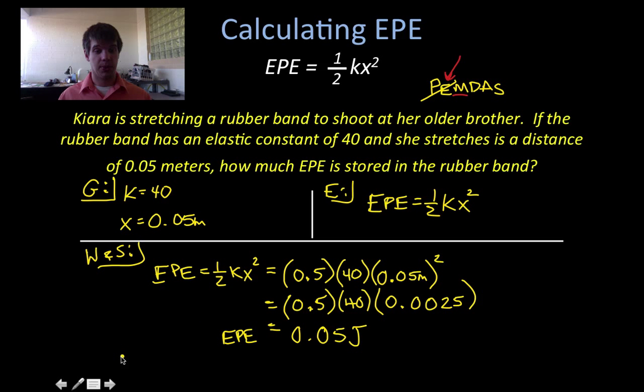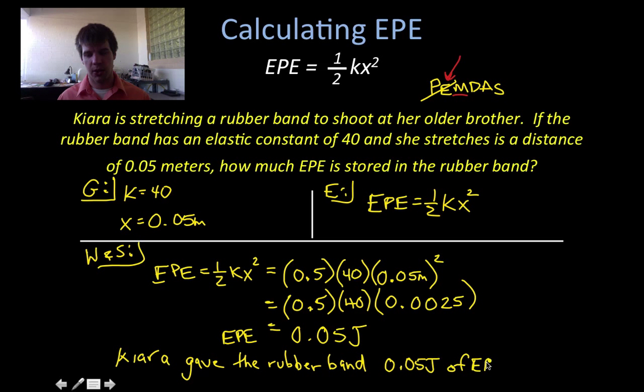So our answer would say, Kiera gave the rubber band 0.05 joules of elastic potential energy.